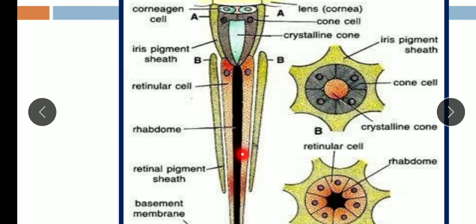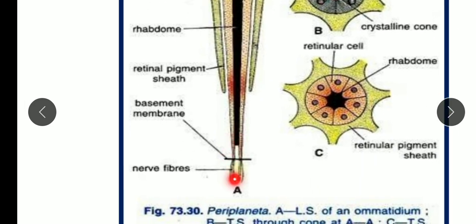The rhabdom contains visual pigments that resemble those of the vertebrate eye — specifically rhodopsin, which you have also studied in the human eye along with iodopsin. This rhabdom area is sensitive to light. The rhodopsins are activated only by light that enters the ommatidium almost parallel to its longitudinal axis — light enters from the lens, then to the cone, and then to the rhabdom. The sensory cells collectively form the optic nerve, which is connected to the brain.